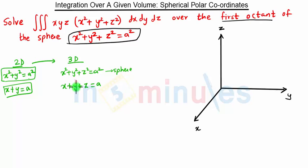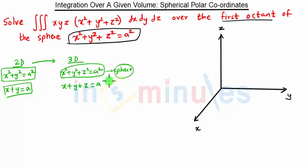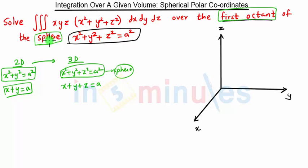So if an equation is in 2D it represents a circle, and in 3D it represents a sphere. Similarly, we can have a parabola, ellipse, and all 2D figures extended into 3D. Since we need to perform integration over the first octant of this sphere, we use the spherical coordinate system, which will make our analysis very simple.